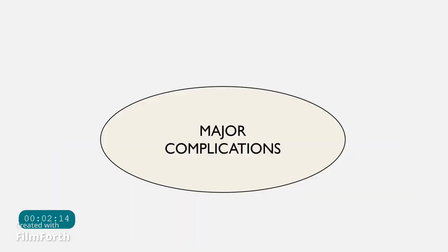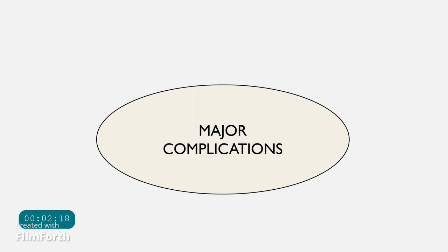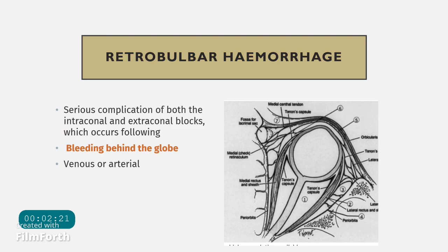Coming to the major complications of needle anesthesia: the first and most dreaded is retrobulbar hemorrhage (RBH). This is a serious complication of both intraconal and extraconal blocks. 'Retro' means behind and 'bulbar' refers to the globe. Bleeding behind the globe in the intraconal space — formed by the four muscles enclosing the optic nerve — is called retrobulbar hemorrhage.